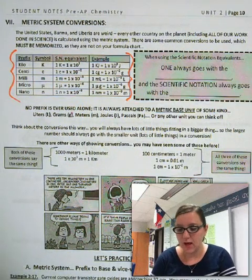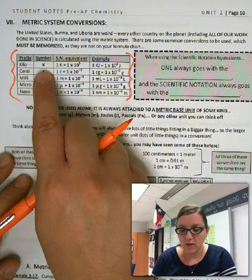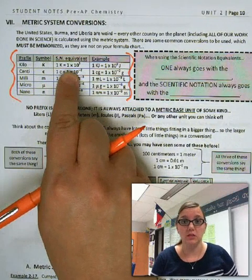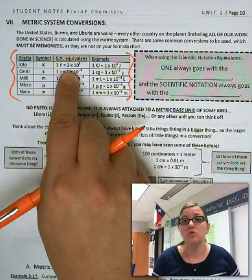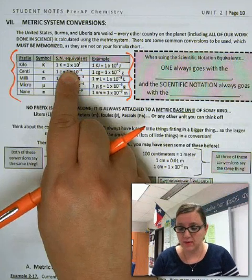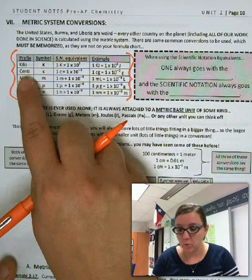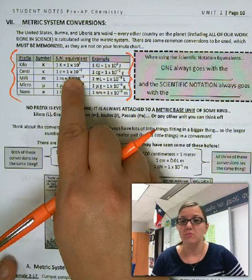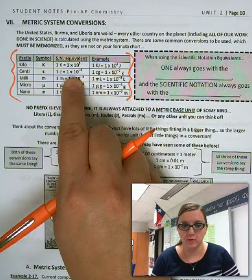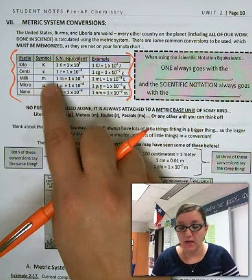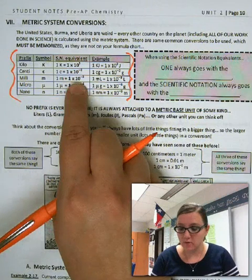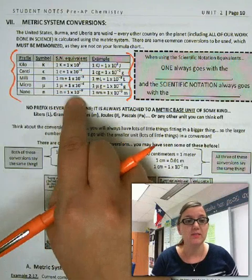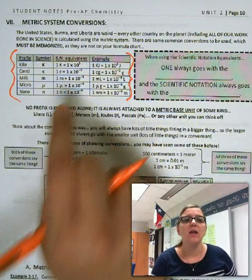So you notice here it talks about like for kilo, that 1 kilo is 1 times 10 to the third of whatever unit you're dealing with, whether it's grams or joules or meters or whatever the case may be. For centi, 1 centi is equal to 1 times 10 to the negative 2. For milli, it's 1 times 10 to the negative third. For micro, it's 1 times 10 to the negative 6. And for nano, it's 1 times 10 to the negative 9.